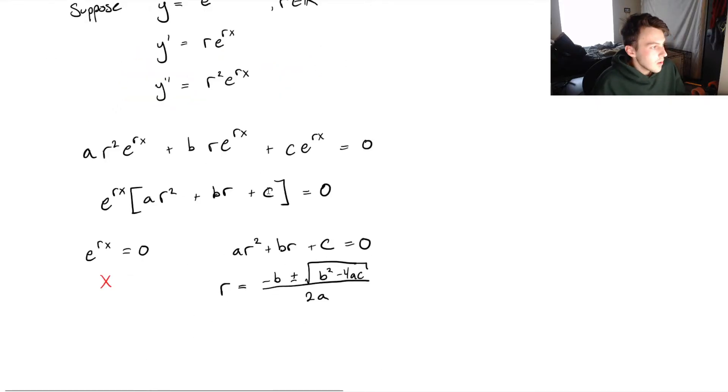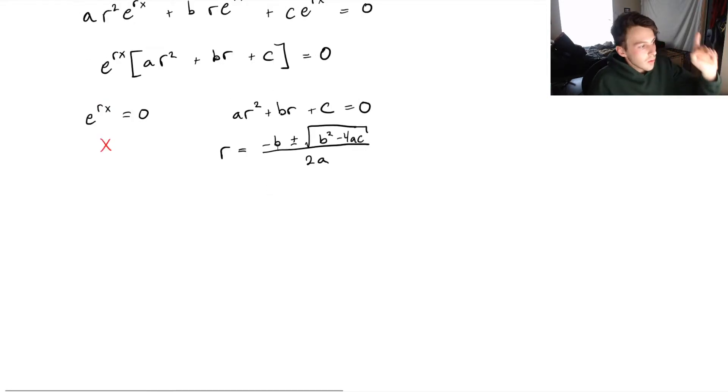So you might be saying, well, what if I find no solutions if b squared minus 4ac is less than zero? And that would actually have different solutions than if b squared minus 4ac was equal to zero. And if b squared minus 4ac is greater than zero, those all will provide different solutions to our differential equation. So in the next couple of videos, I'm going to be going through each and every case, showing you what the solutions will be for those cases.